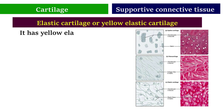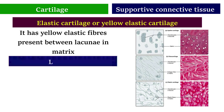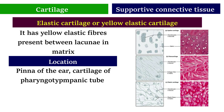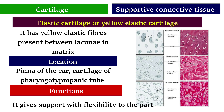Elastic cartilage, or yellow elastic cartilage, has yellow elastic fibers present between the lacunae and matrix. It is located in the pinna of the ear and the cartilage of the pharyngotympanic tube. Its function is to give support with flexibility to the part.